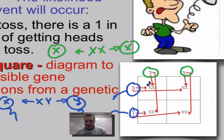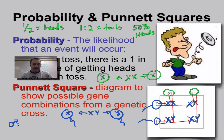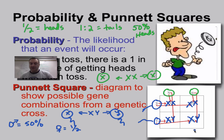Now it's just plug and chug: XX, XX, XY, XY. From this Punnett square, the chance of becoming a boy is 50%, or one out of two, and the chance of becoming a girl is also 50%, or one out of two, because two out of four reduces to one out of two. Each box represents 25%, so two boxes at 25% each gives you 50%.